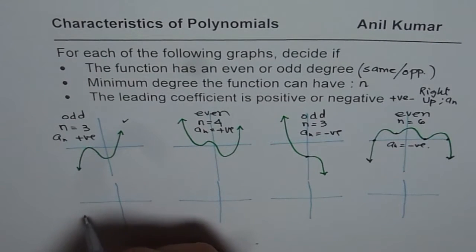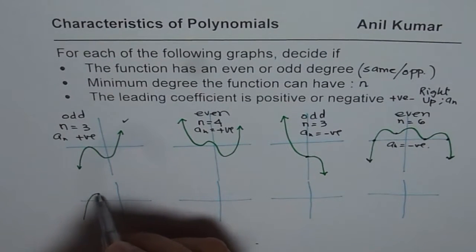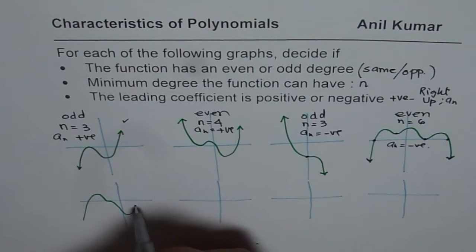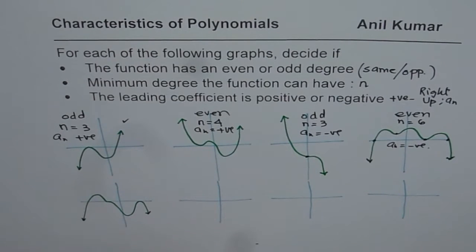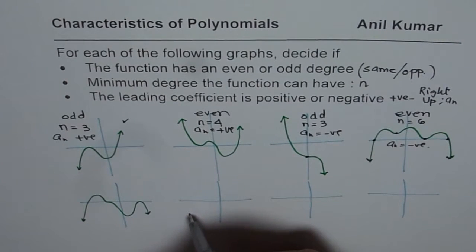Okay, so here is the first function, linear zero, and this is kind of like this, and then like this. Okay, so that is the first graph.